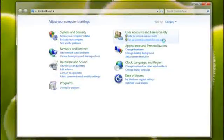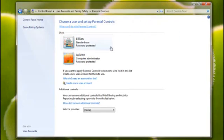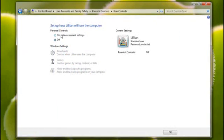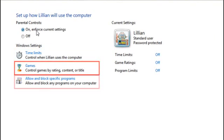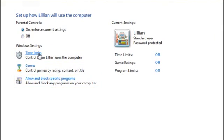I'll start by opening parental controls. Now, I'll select Lillian's account and turn them on. Here, I can select which things I want to control: time limits, games, and programs. I'm going to click time limits.